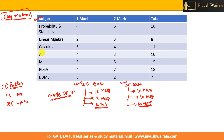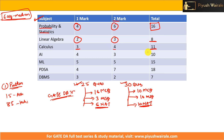First let's see the weightage. From Probability and Statistics there were four one-mark questions and six two-mark questions, making a total of 16 marks. Linear Algebra had two one-mark and three two-mark questions, totaling eight marks. Calculus had three one-mark and four two-mark questions, totaling 11 marks.